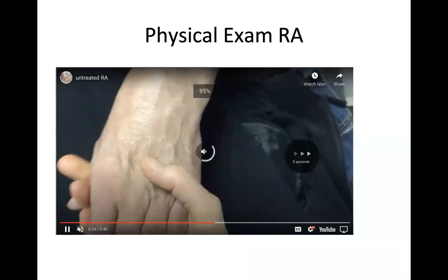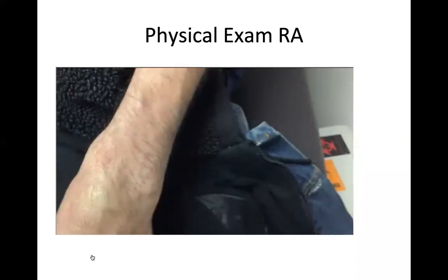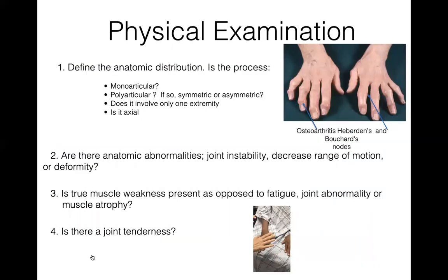This patient has osteoarthritis — these are Heberden's nodes over the DIP joints and Bouchard's nodes over the PIP joints, with bony enlargement. The patient may lose their ability to make a good grip. When you examine someone, you're trying to decide: is it monoarticular, symmetric or asymmetric? Does it involve one extremity, is it axial? Are there anatomic abnormalities, joint instability, decreased range of motion? Is there true muscle weakness as opposed to fatigue? Is there joint tenderness?